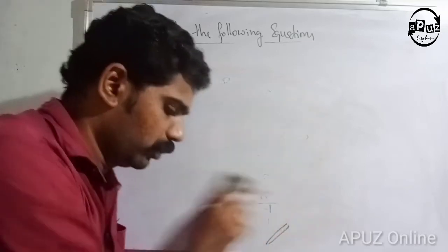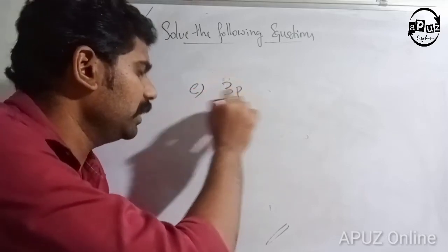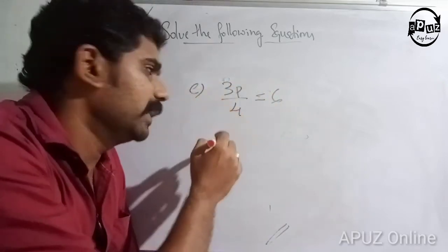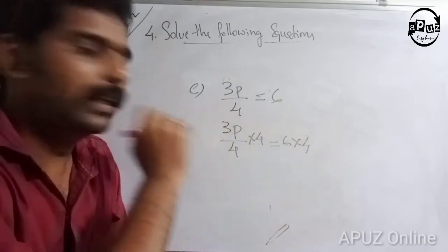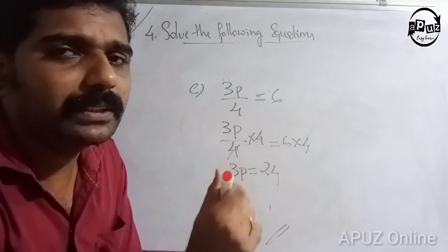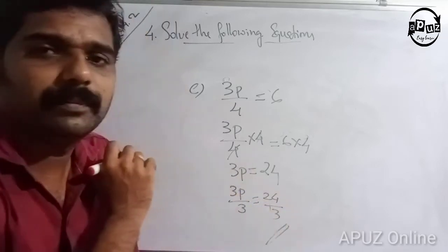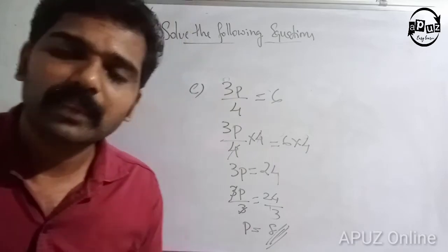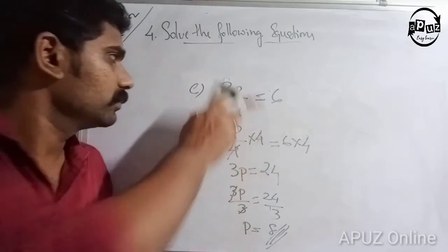Next question E: 3p divided by 4 is equal to 6. Multiply both sides by 4: 3p divided by 4 into 4 is equal to 6 into 4. So 3p is equal to 24. Divide by 3: p is equal to 8.